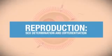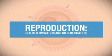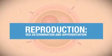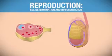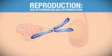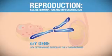After fertilization occurs, the next step is sex determination. Early on in development, the embryo has primitive gonads that can either become ovaries or testes. Whether they become ovaries or testes is determined by a gene located on the Y chromosome. The gene is called the SRY gene, which stands for sex determining region of the Y chromosome.